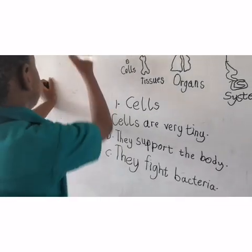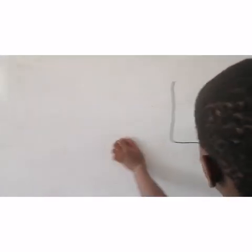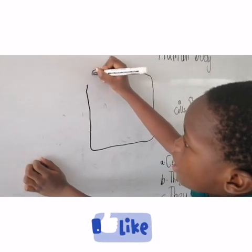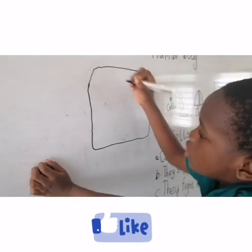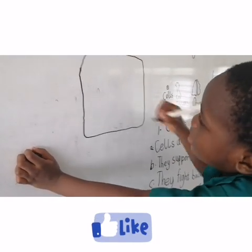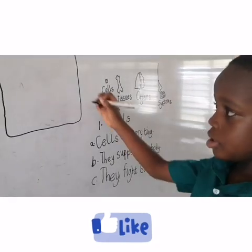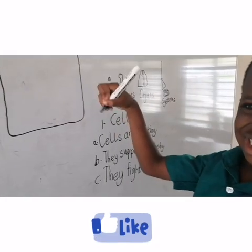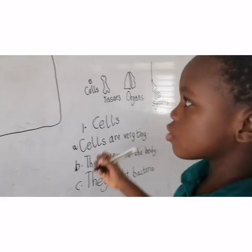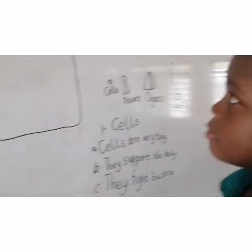Let me draw the picture of a cell in this diagram. I'm going to show you. The liquid and the water — the water thing in the cell is called the cytoplasm.